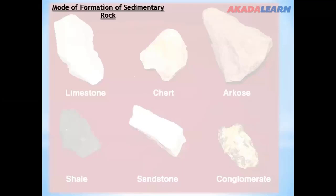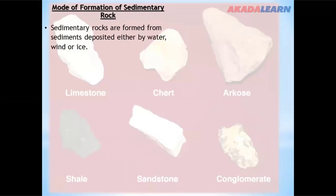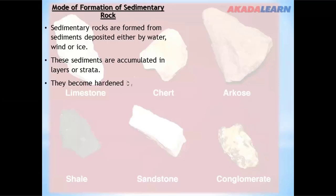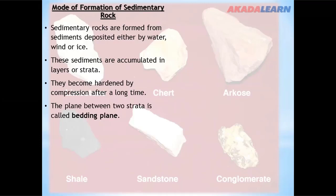Sedimentary rocks are formed from sediment deposited by water, wind, or ice. These sediments are accumulated in layers or strata. They become hardened by compression after a long time. The plane between two strata is called a bedding plane.